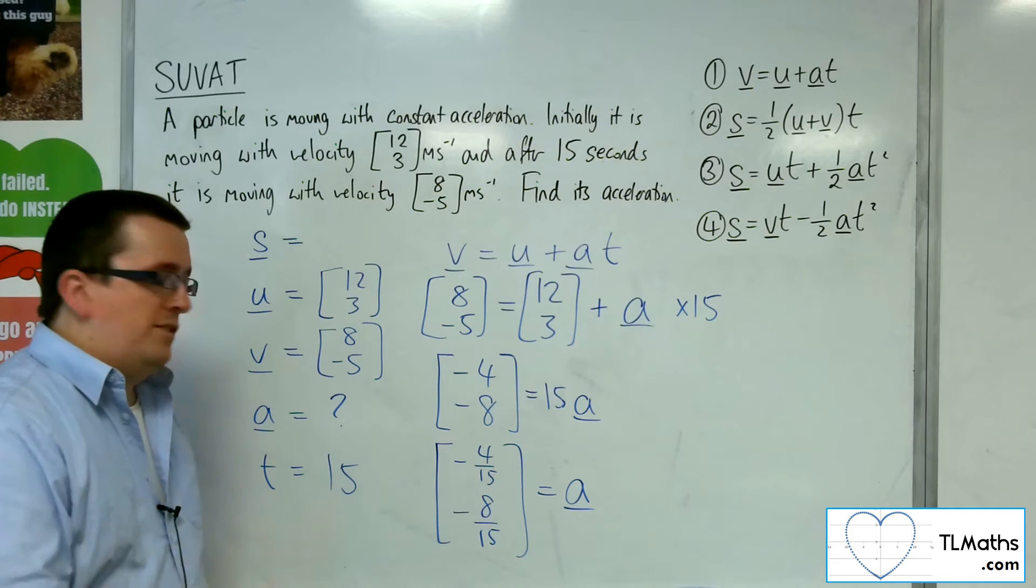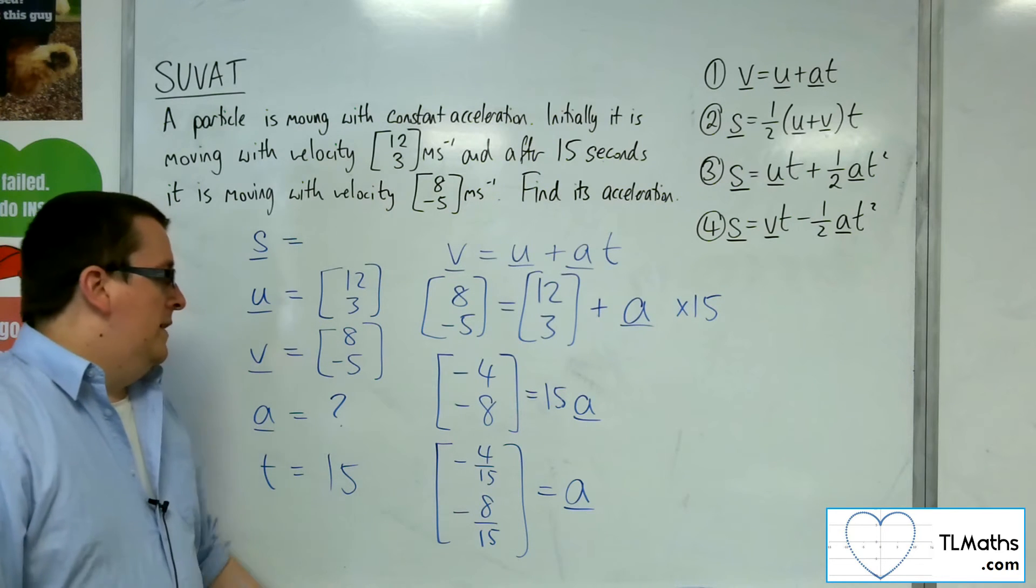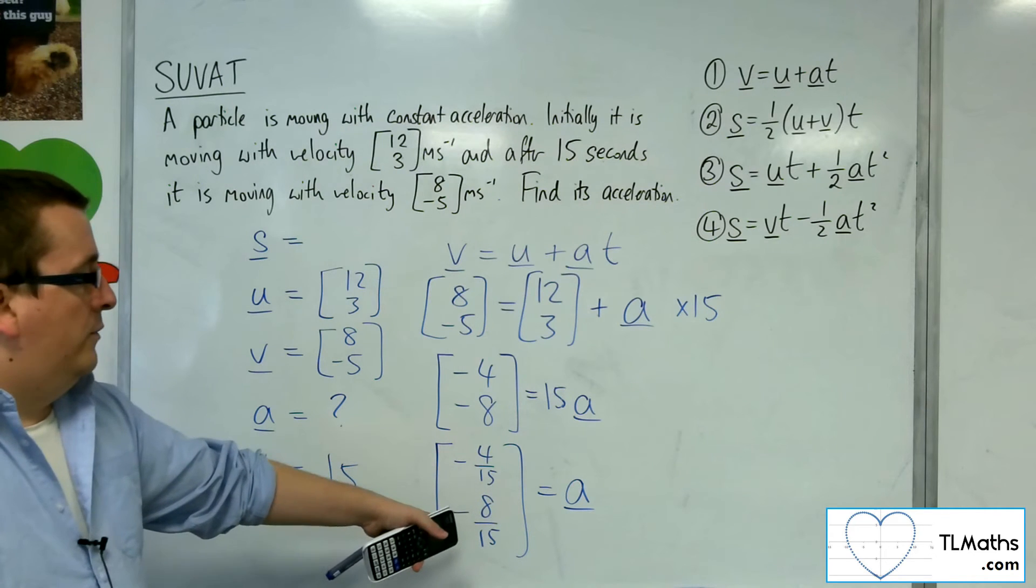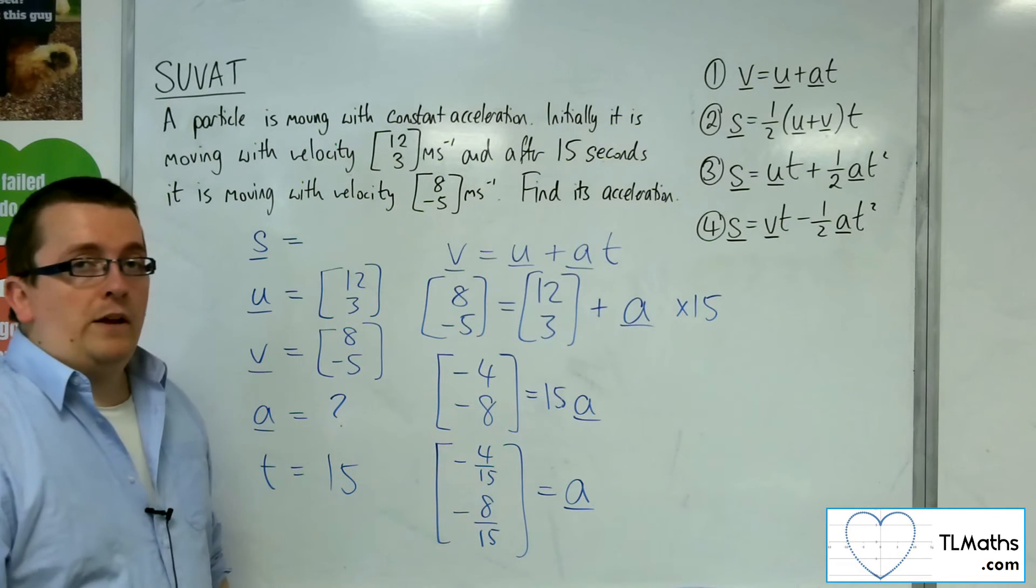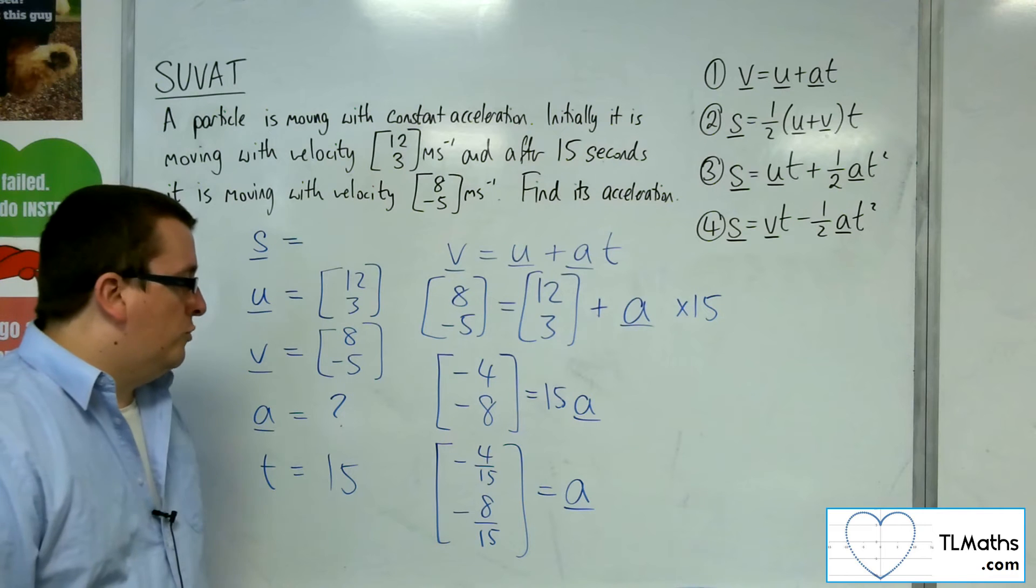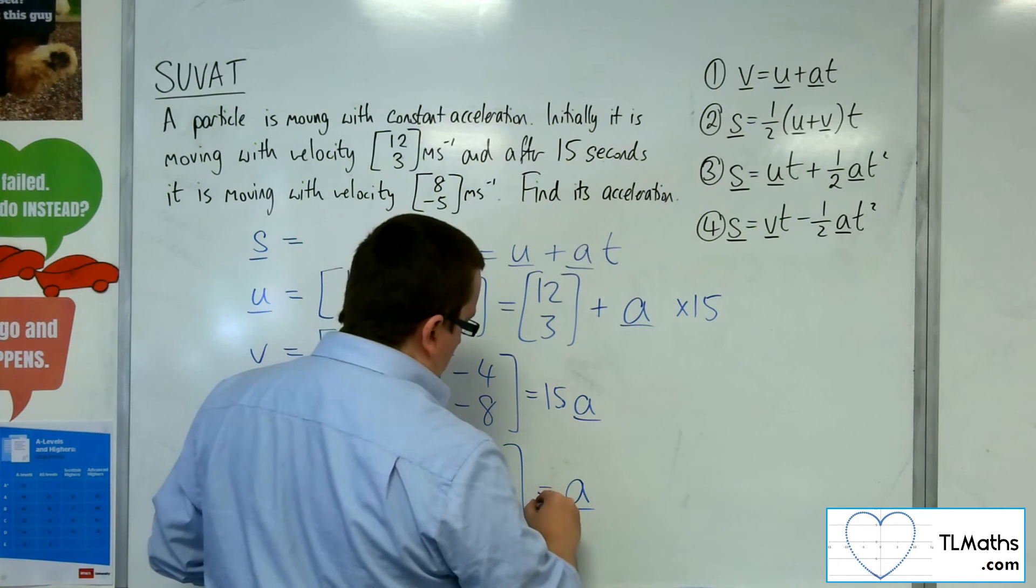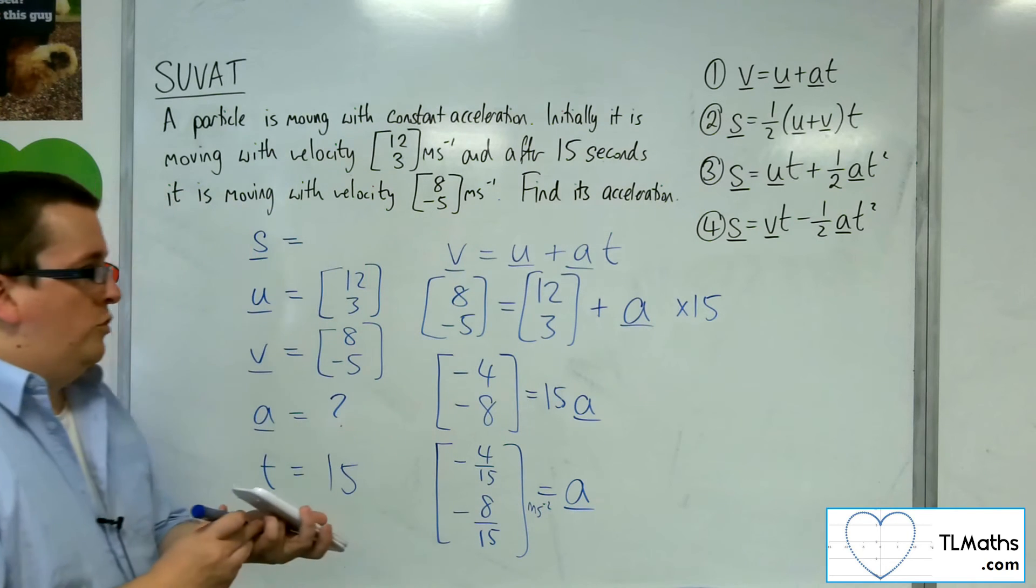If the question had asked us to find the magnitude of the acceleration, then we would have had to have drawn this out as a vector, and then found the hypotenuse of the right-angled triangle. So, it would be minus 4 fifteenths minus 8 fifteenths meters per second per second for the acceleration.